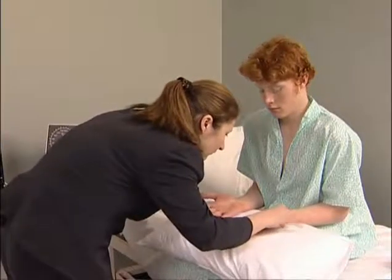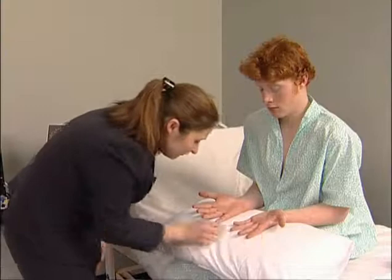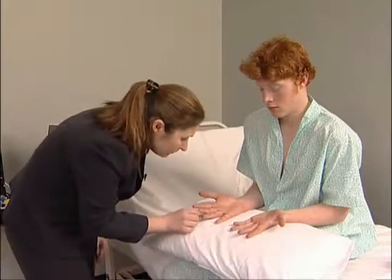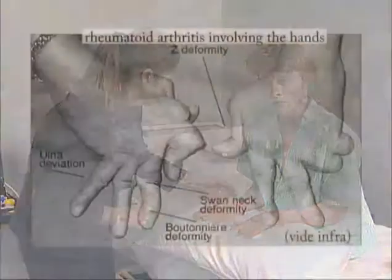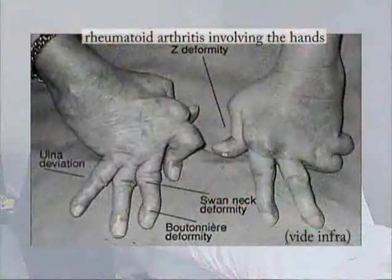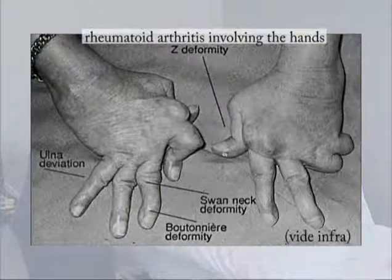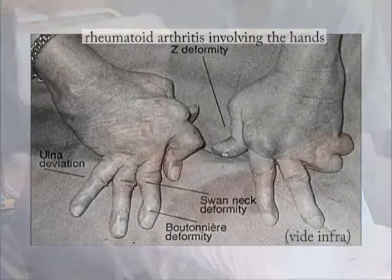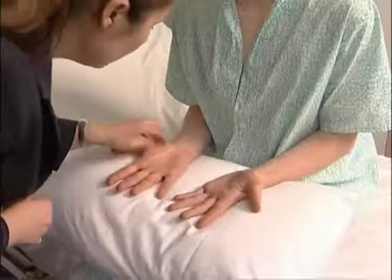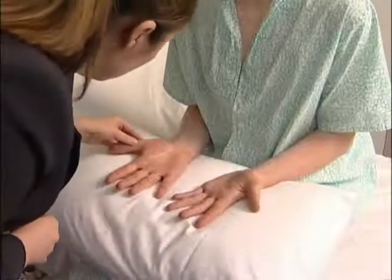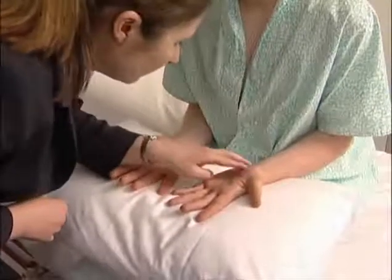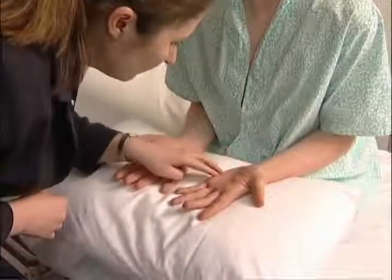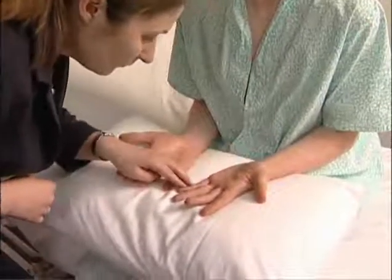Note deformity of the architecture of the hands. The changes caused by rheumatoid arthritis are very characteristic. Look for the typical changes of osteoarthritis — bony swellings at the base of the distal interphalangeal joints.